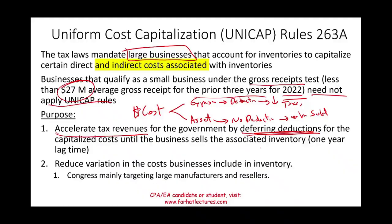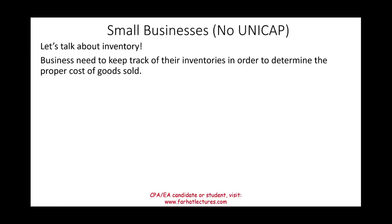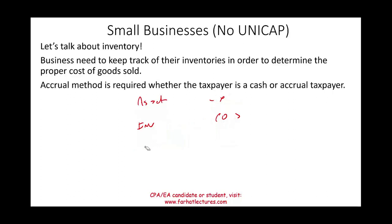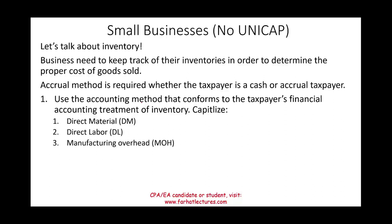Let's talk about inventory and start with small businesses, so you can appreciate the UNICAP rules by comparing small versus large. Businesses need to keep track of inventory because inventory starts as an asset, then turns into an expense through cost of goods sold — that's the matching principle. The accrual method is generally required for taxpayers with inventory. You capitalize direct material, direct labor, and manufacturing overhead if you're manufacturing; if you're buying inventory, you capitalize direct costs associated with it.